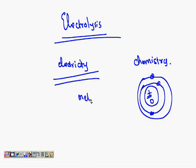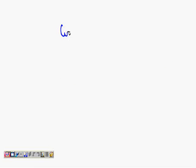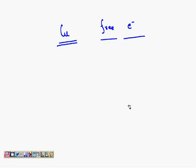When we are considering metals, let us consider copper metal. It has free electrons present in the outermost shell, which are responsible for the flow of electricity and the flow of electric current.